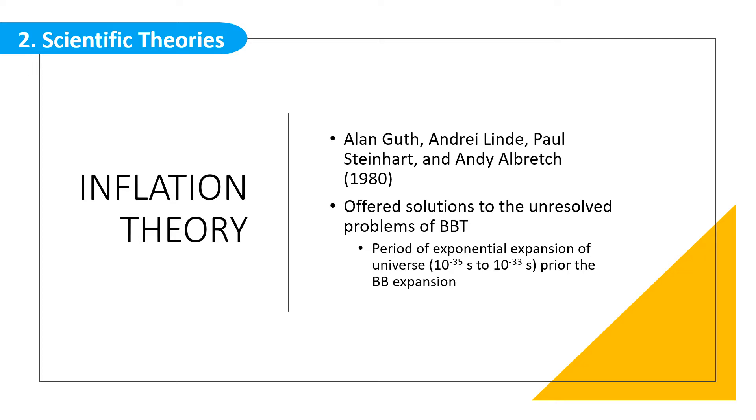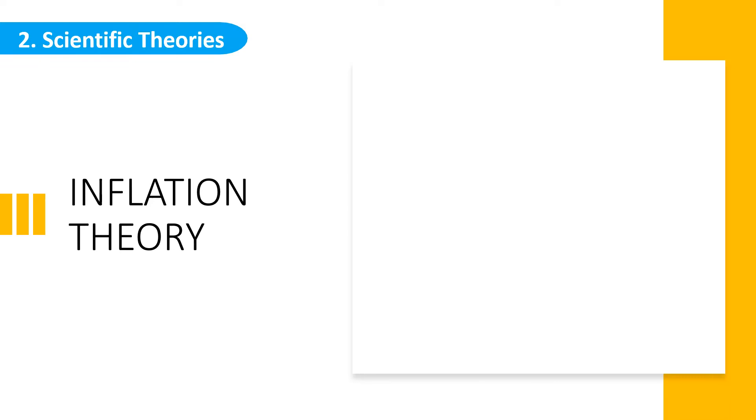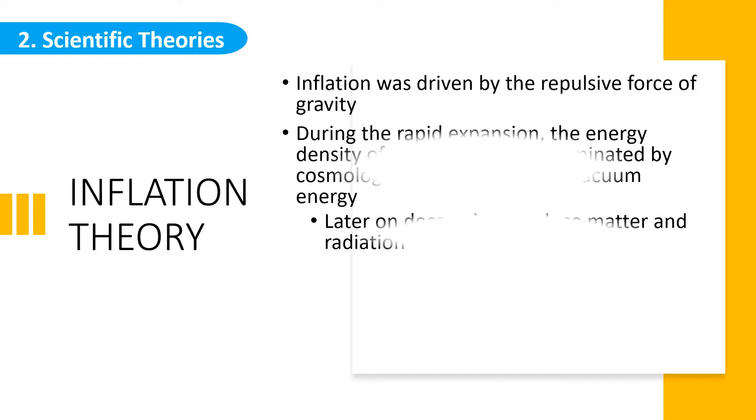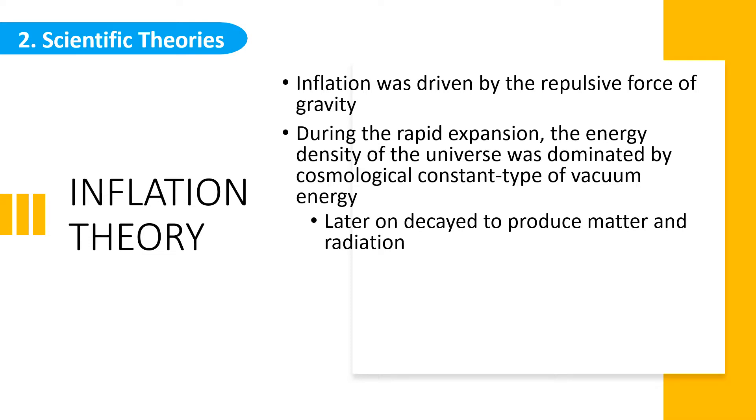Guth believed that this inflation was driven by the repulsive force of gravity, a behavior that was previously predicted by Albert Einstein's theory of relativity. During the rapid expansion, the energy density of the universe was dominated by cosmological constant type of vacuum energy. Later on, this decayed to produce the matter and radiation that filled up the universe.